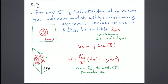In conformal field theories in D dimensions, the answer for all these quantities computed from ball-shaped entanglement entropies is the same in all CFTs up to one overall parameter. In a 2D CFT, that's just the central charge. In higher dimensions, there's some parameter A* that governs this. So if I want to go from one CFT to another, the most I'd have to do is multiply by this overall scaling factor.